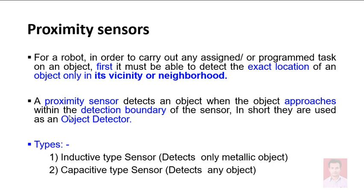A proximity sensor detects an object whenever that object approaches within the detection boundary. Every sensor senses some object or material when it comes into range. Just as an electromagnetic field has some range where you can experience electromagnetic force, or a planet's gravitational force has a range, similarly, a sensor can detect a particular object only when it comes into its detection boundary. That detection boundary plays an important role.